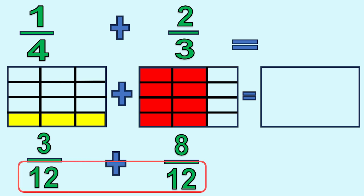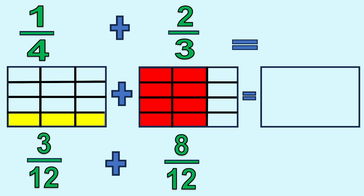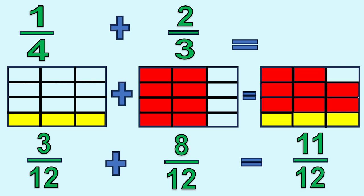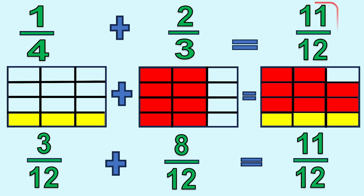We can add now because the denominators are already the same. Add the numerators first: 3 plus 8 equals 11. Copy the denominator 12. So the answer is 11 twelfths.